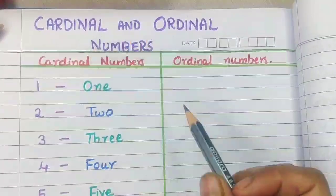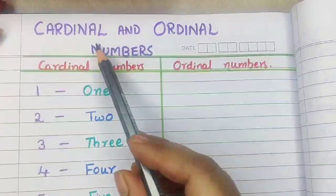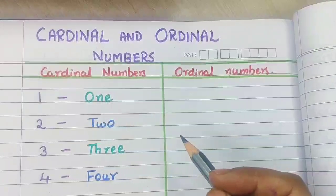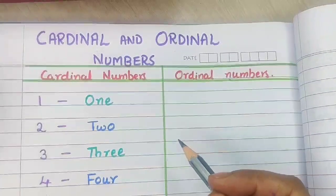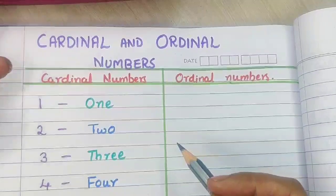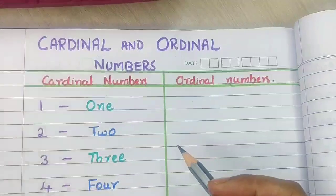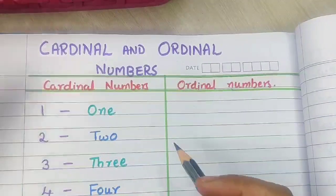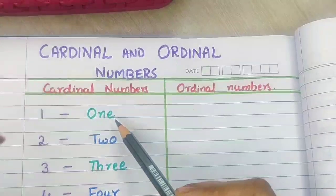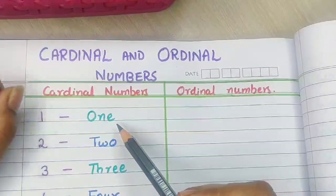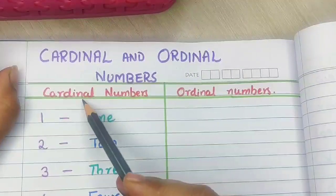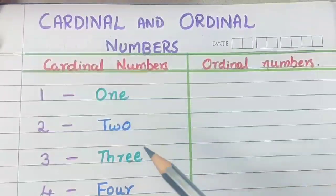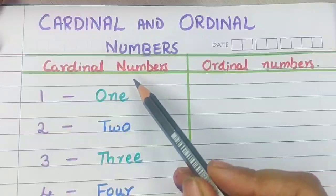First, let us see what are cardinal numbers. Cardinal numbers are the numbers which denote how much of something we have. Like if I have chocolates, I have to tell how many chocolates I have — 3 chocolates, 5 chocolates, 10 chocolates, or 20 chocolates. So it gives you the number of something which you have. Numbers like 1, 2, 3, 4 — all these are cardinal numbers.